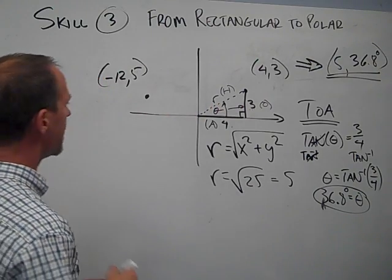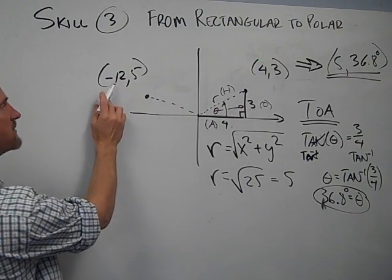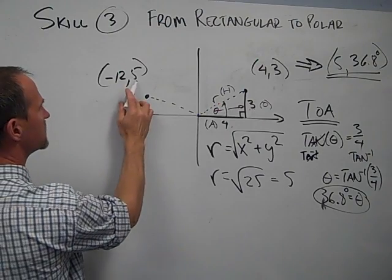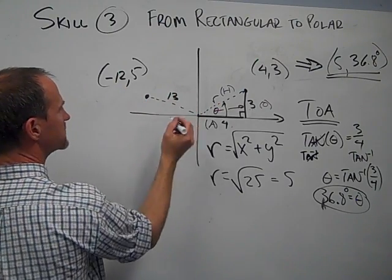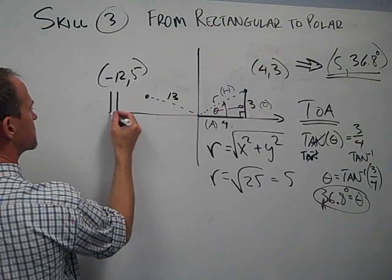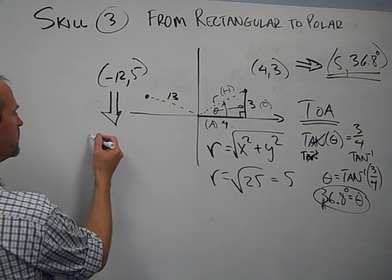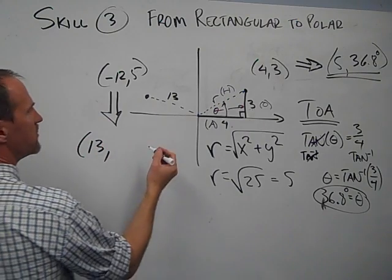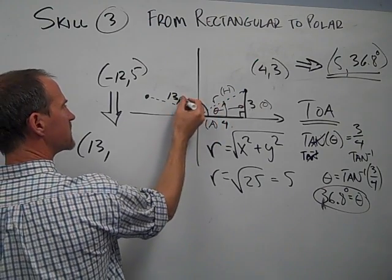So doing the same math, I can find that this distance here is negative 12 times negative 12 is 144, plus 25 is 169. When I square root that, that's exactly 13. So again, converting this to polar is going to give me a radius of 13. But then I want to know what this angle is rotating around to there.